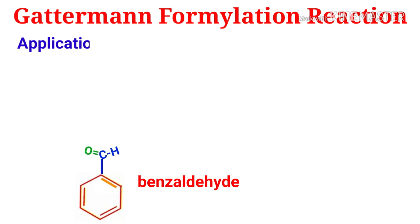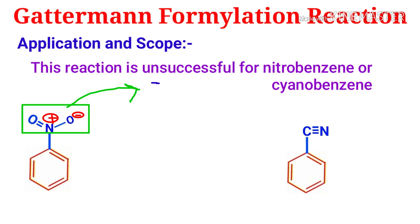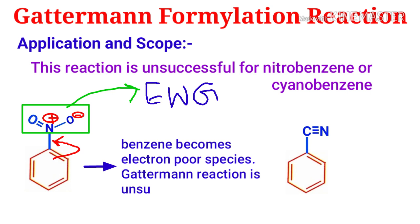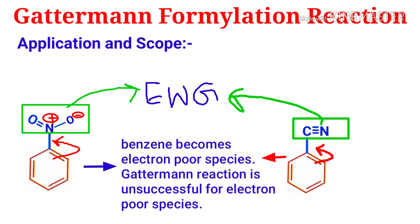Now let us discuss the application and scope of the Gutterman-Formylation reaction. This reaction is unsuccessful for nitrobenzene and cyanobenzene. Because the nitro group is an electron-withdrawing group, it takes electrons from the benzene ring, and the benzene becomes an electron-poor species. We have already discussed that the Gutterman reaction is unsuccessful for electron-poor species. Similarly, the cyanide group is also an electron-withdrawing group, so electron density decreases from the benzene ring.